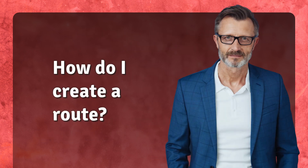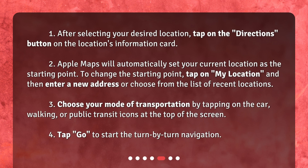How do I create a route? 1. After selecting your desired location, tap on the Directions button on the location's information card. 2. Apple Maps will automatically set your current location as the starting point. To change the starting point, tap on My Location and then enter a new address or choose from the list of recent locations.